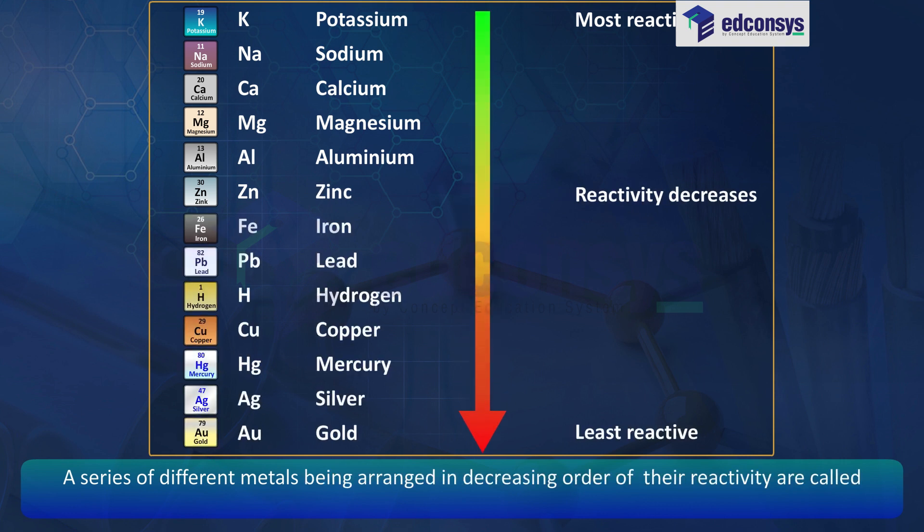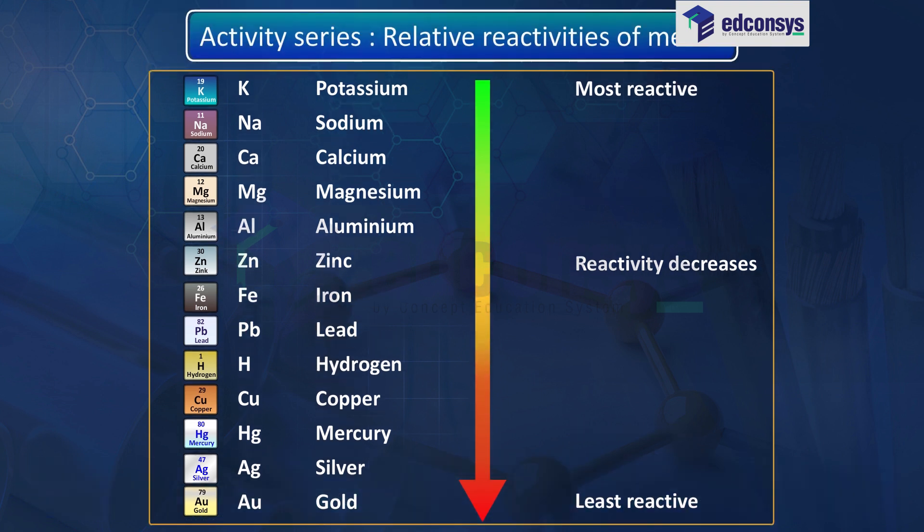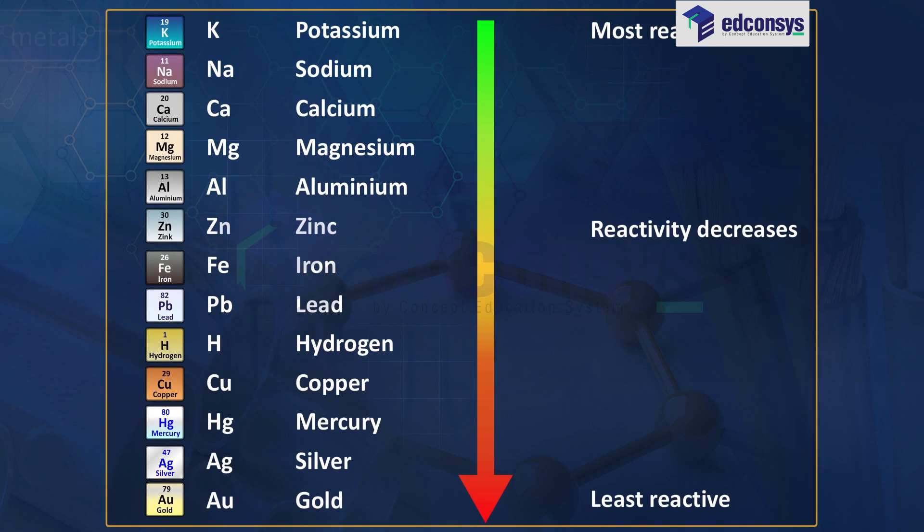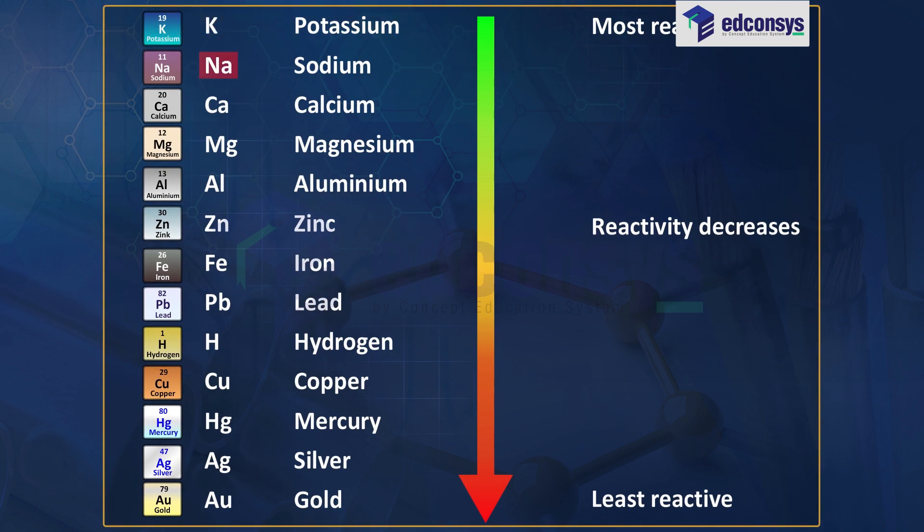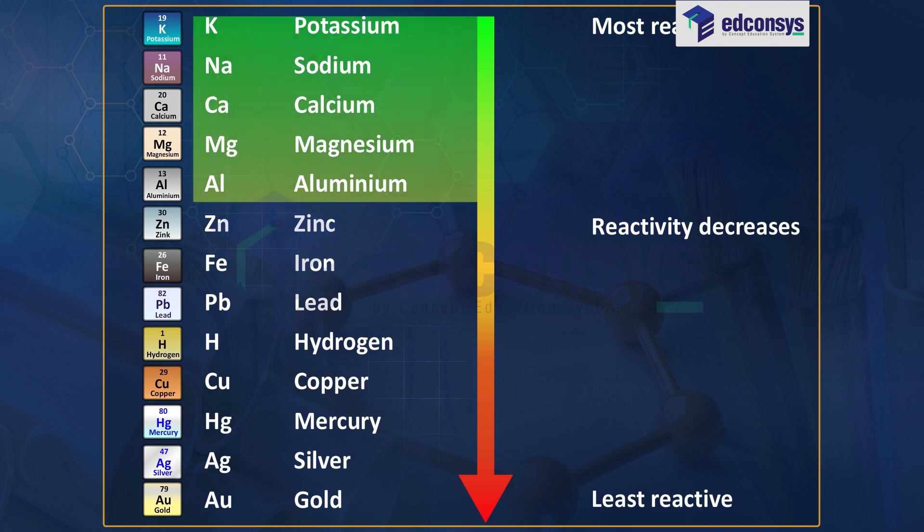Activity series - relative reactivity of metals: K (potassium), Na (sodium), Ca (calcium), Mg (magnesium), Al (aluminum) - these metals are more reactive. Zn (zinc), Fe (iron), Pb (lead), H (hydrogen), Cu (copper), Hg (mercury), Ag (silver) - these metals' reactivity decreases.